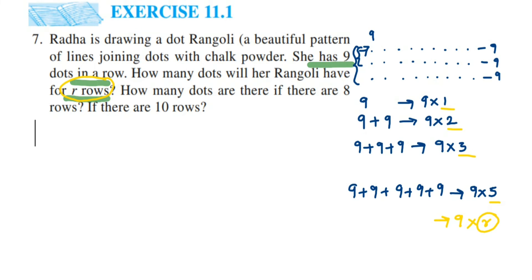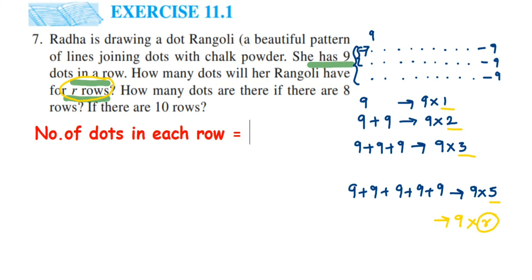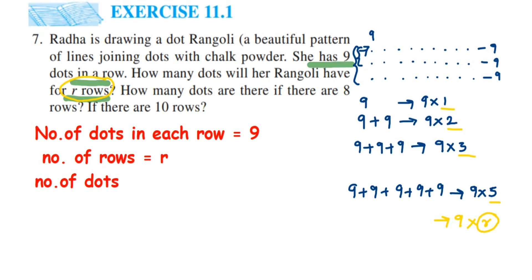Let me write down the answer. The number of dots in each row is nine, as given in the question. The number of rows is R. Therefore, the number of dots in R rows will be equal to nine into R, which is 9R.